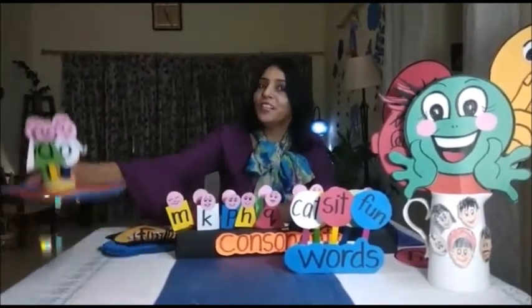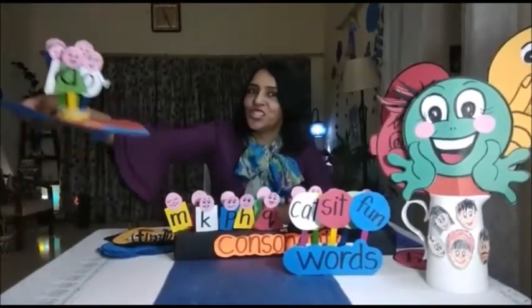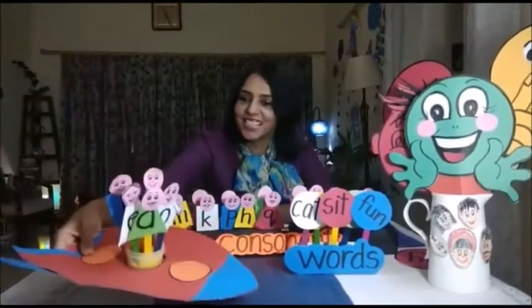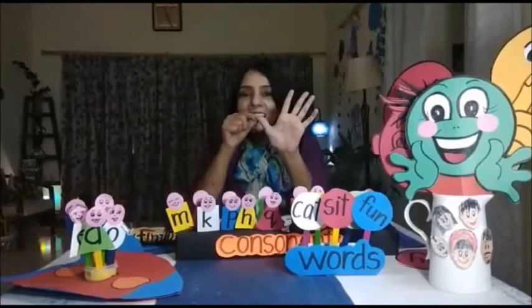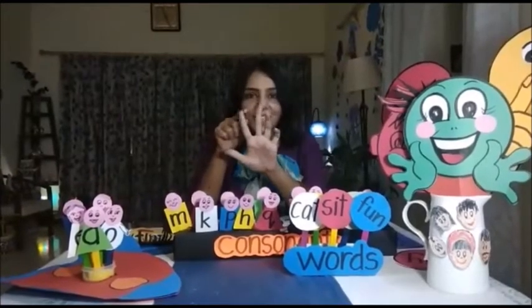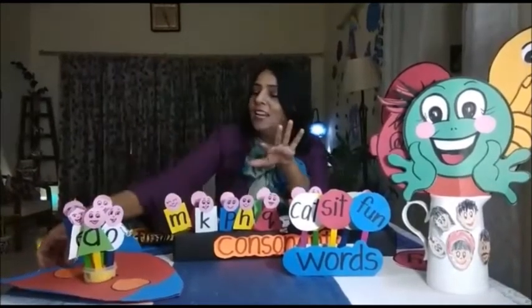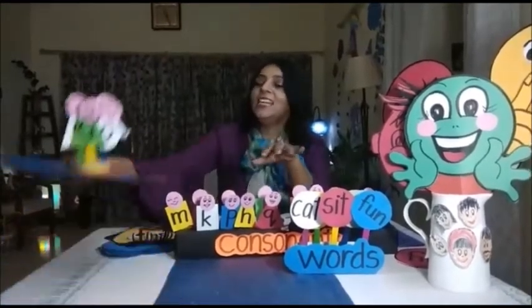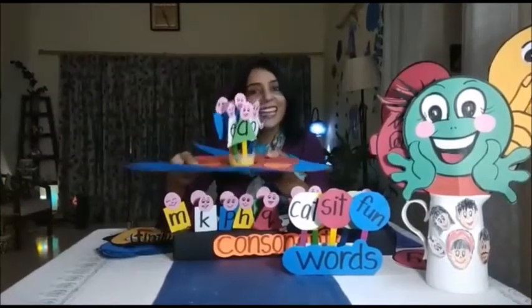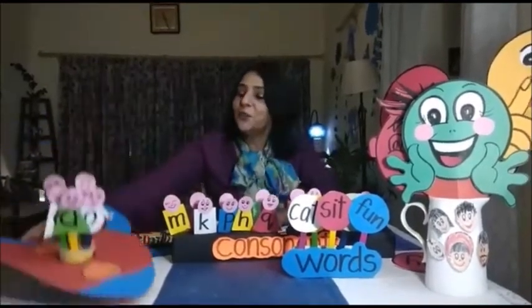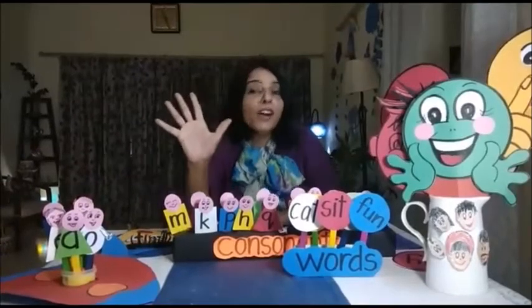Do you remember who were they? They were five friends — A, E, I, O, U. A, E, I, O, U. They are the five vowels.